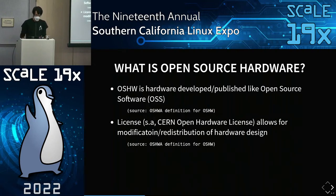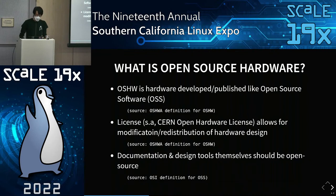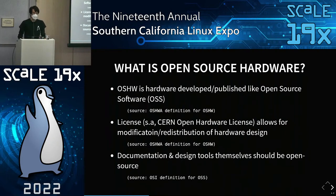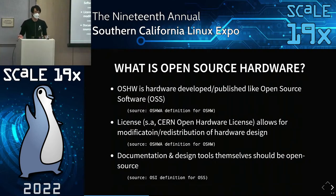On the legal side, it should include a license — such as the CERN Open Source Hardware License — which allows for modification and redistribution of the hardware design, as per the OSHWA definition. The documentation and design tools themselves should also be open source, from the Open Source Initiative's definition of open source software, which vicariously also applies to open source hardware.